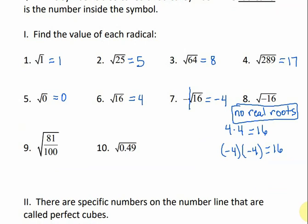For the square root of a fraction, we just take the square root of each part of the fraction. So the square root of 81 over 100: the square root of 81 is 9, and the square root of 100 is 10, so it would just be 9 over 10. The square root of 0.49 would just be 0.7.